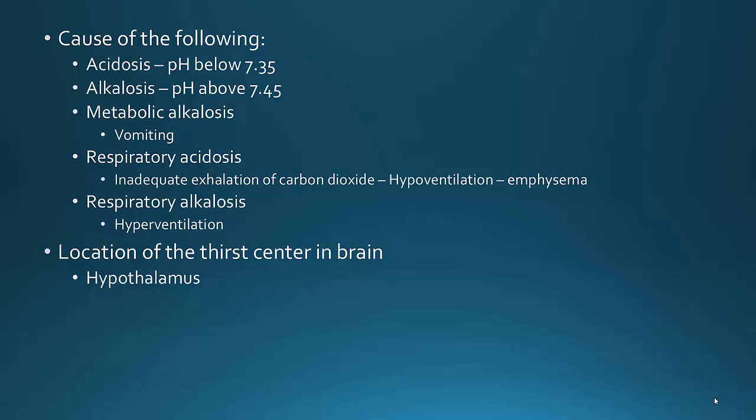For chapter 27, what's the main protein buffer in blood plasma? This is albumin. In your notes it talks about the major role of hemoglobin, but albumin is the biggest protein buffer. We didn't specifically talk about that in the notes, but it's also found in your textbook. So the main protein buffer in blood plasma is albumin.